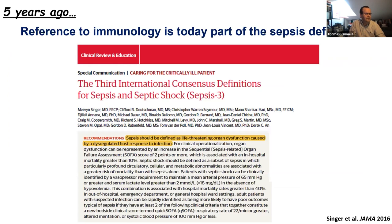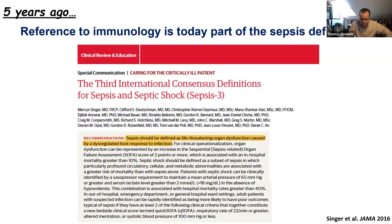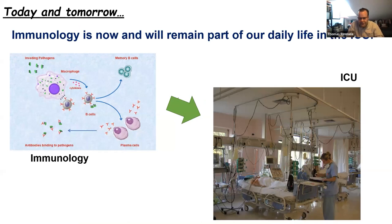The whole idea is to propose extracorporeal devices able to restore and modulate this inflammatory response in order to restore immune homeostasis. This is extremely important because even in the sepsis definition proposed by the Surviving Sepsis Campaign, the immunology component is referenced. Sepsis should be defined as a life-threatening organ dysfunction caused by a dysregulated host response to infection — which means we need to work on modulating the host response.